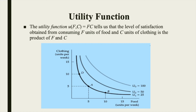The higher indifference curve U2 contains all market baskets for which f×c = 50, and the highest indifference curve U3 represents all market baskets for which f×c = 100.